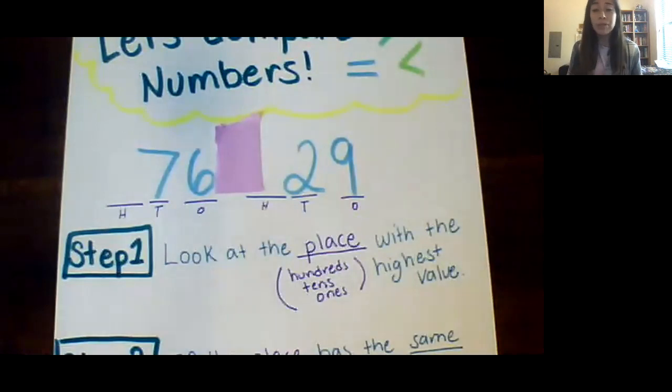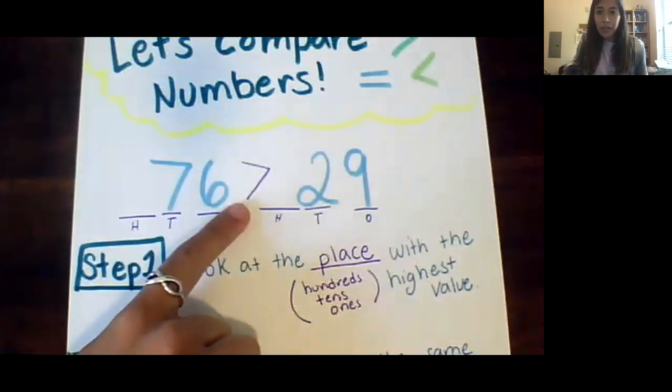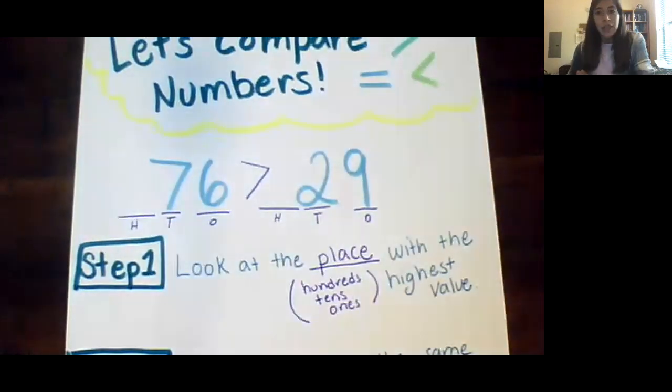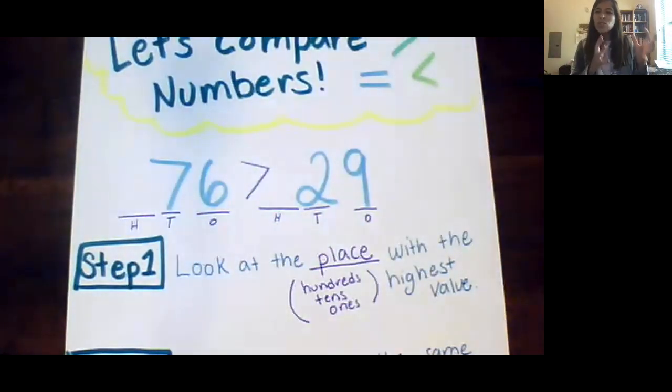Now we have some special symbols we use. Remember it kind of looks like an alligator and alligators will always open their mouth to the bigger number. So I'm going to use this symbol as my greater than. Now friends like I said we're in second grade and we have to prove that we know that 76 is quite a bit bigger than 29. And all of the strategies we just use helps tell us which one's which.